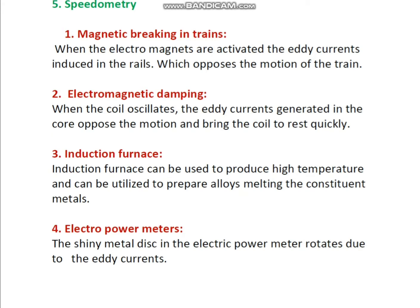We can explain the four main headings of the advantages of eddy currents. First one, magnetic braking in trains: when the electromagnets are activated, the eddy currents are induced in the rails which opposes the motion of the train.